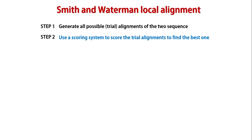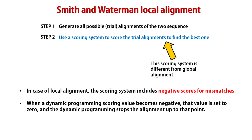Local alignment is done using the same dynamic programming approach as global alignment, with two modifications. First, the scoring system includes negative scores for mismatches. Second, unlike global alignment, this program does not run from end to end. During alignment scoring, when a dynamic programming scoring value becomes negative, that value is set to zero and the dynamic programming stops the alignment up to that point.